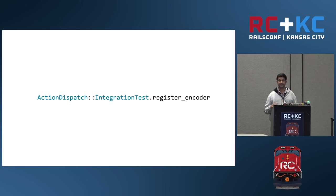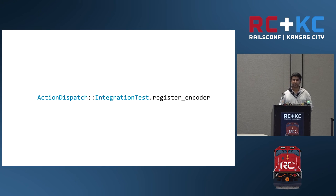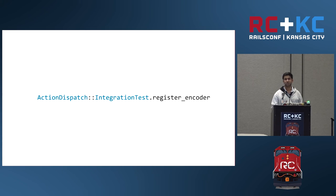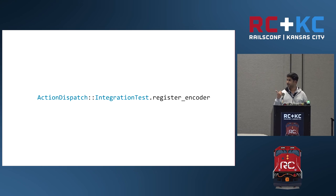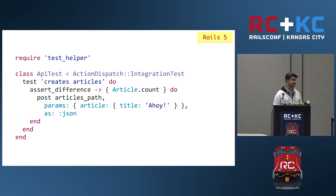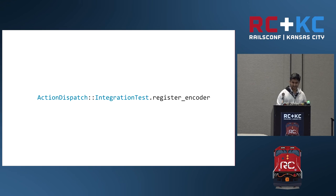Currently we only have the JSON encoder — there is no other encoder present in the codebase right now. But if you want to have your own encoder, say for XML, you can use a registration hook to register it. The register_encoder method expects two things — the way to encode the body of the response. Once registered, you can just pass it as `as: :xml`.